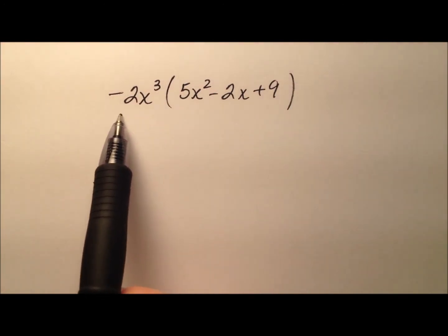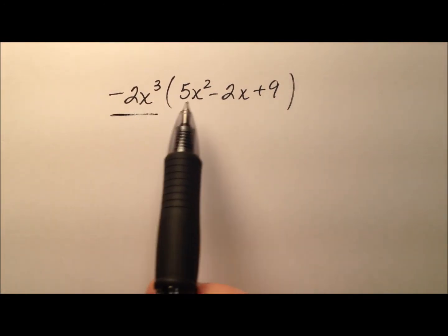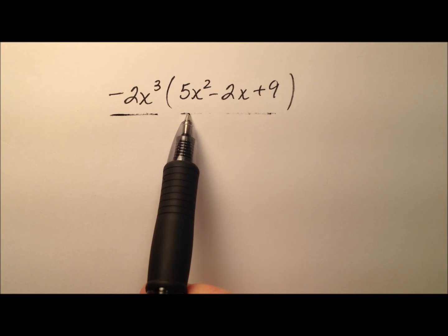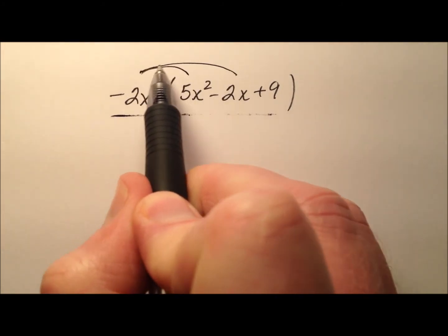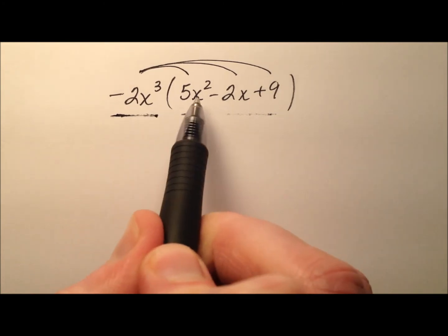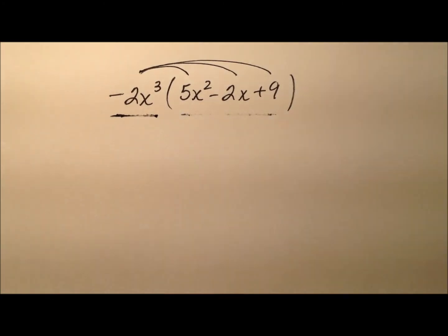In this example, we're going to take this monomial, negative 2x cubed, and multiply it by the polynomial here. The way we're going to do that is by using the distributive property, so this monomial will be multiplied by each of the three terms in that polynomial.